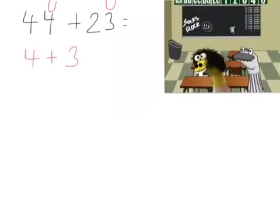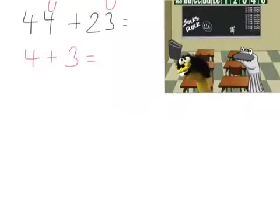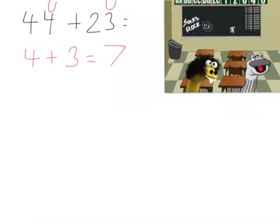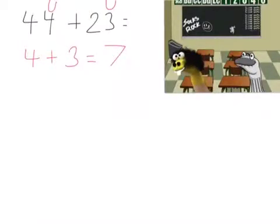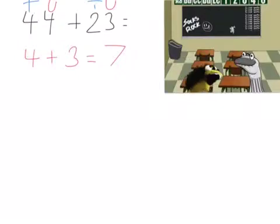Well done. So, okay. Four add three gives me seven. Good. Keep going. Then, forty add twenty gives me sixty.